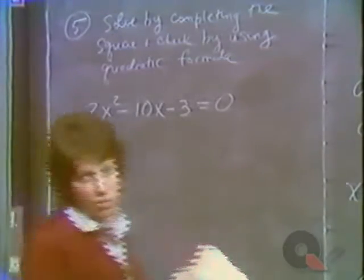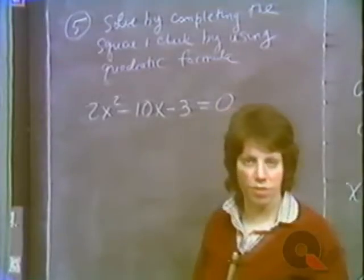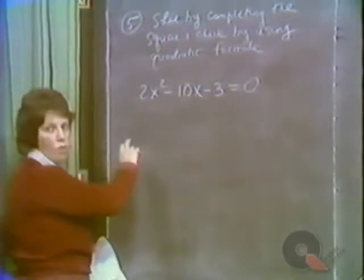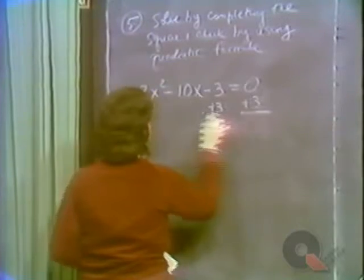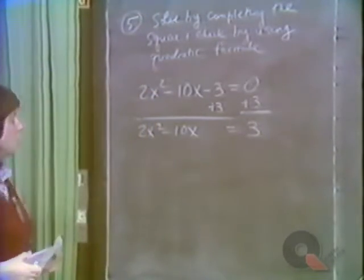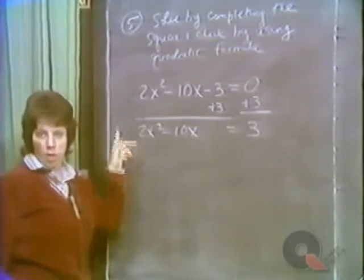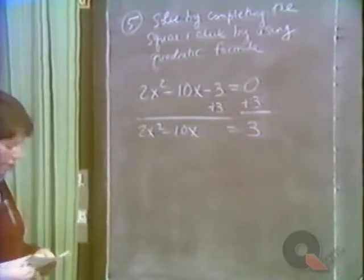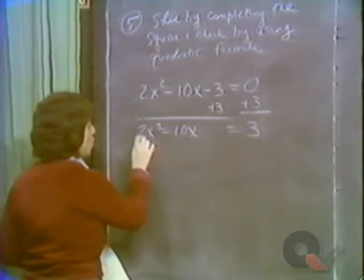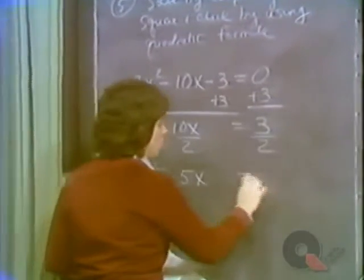Assuming you've tried to factor and it doesn't yield binomial factors with integer coefficients, we'll do it by completing the square. We don't use standard form here — we get the constant over to the other side. Adding 3 to both sides gives 2x squared minus 10x equals 3. One more step: the technique requires a coefficient of 1 on x squared, so we divide both sides by 2, giving x squared minus 5x equals 3 halves.